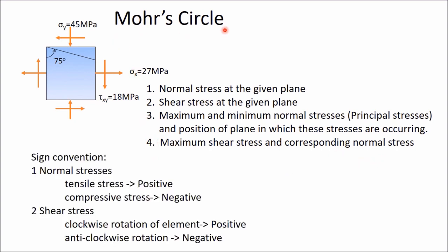For drawing Mohr's circle, we use the following sign conventions. For normal stresses, if the normal stress is tensile, we take it as positive; if it is compressive, we take it as negative. In case of shear stress, clockwise rotation of the element is positive and anticlockwise rotation is negative. Here sigma x is tensile so it is taken as positive. Sigma y is compressive, so it is negative.